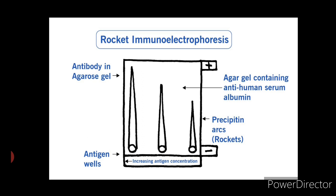The mechanism can be explained as follows: in electrophoresis, the antigen migrates in the electric field into the antibody-containing gel. The antigen combines immediately with the antibody to form immune complexes, and these complexes continue migration.